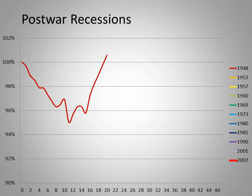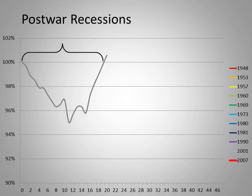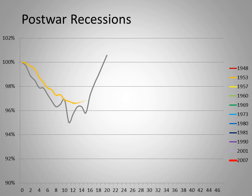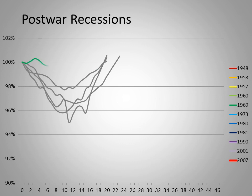The recession of 1948, for example, lasted about 20 months and employment shrank to about 95% of its pre-recession peak. The next four recessions, beginning in 1953, in 1957, in 1960, and in 1969, were of similar depth and duration.